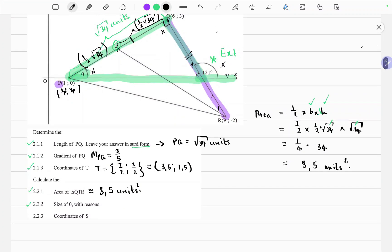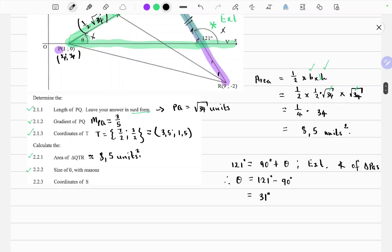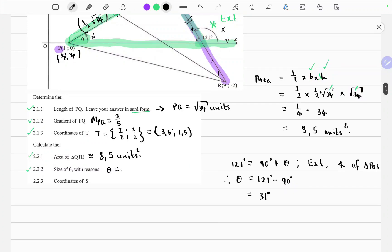So to answer the question, we can say the exterior angle 121 degrees is equals to 90 degrees plus theta. And the reason is the exterior angle of triangle PQS. So therefore theta, to make theta the subject of the formula, we'll get 121 degrees minus 90. And this is 31 degrees. So theta is equals to 31 degrees.